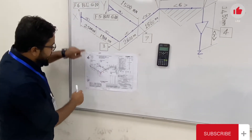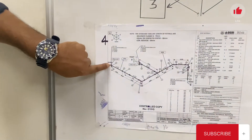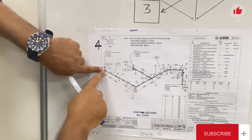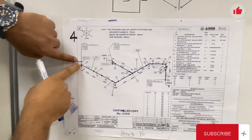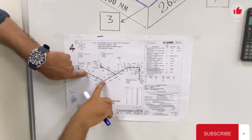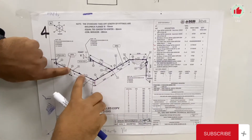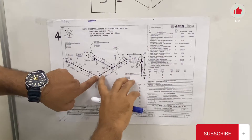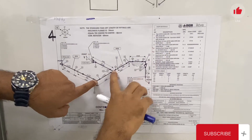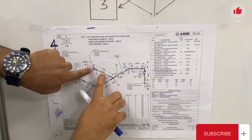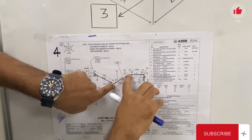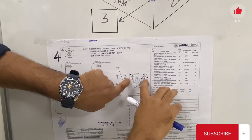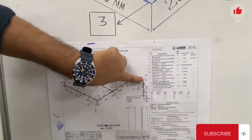Now we will calculate pipeline one by one. We start from point X. We have around seven pipes here. Pipe number one is from this point to point one. Pipe number two is from here to here. Pipe number three is from here to here. Then we have pipe number four from here to here. Then pipe number five from here to here. Then pipe number six from here to here. Then pipe number seven from here to here.